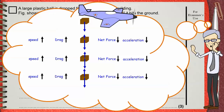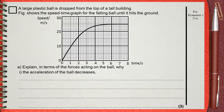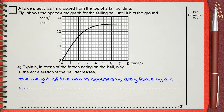Speed increases, drag increases, net force decreases, so acceleration decreases. We can formulate this in a simple answer. So, if the question asks about why the acceleration of the ball decreases: